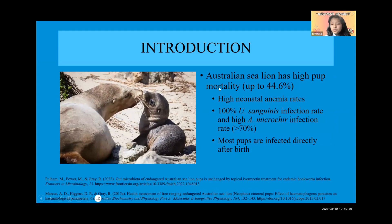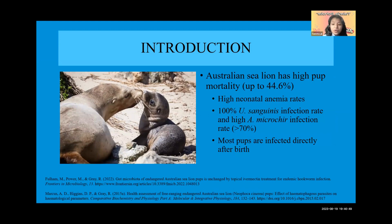One of the reasons why the Australian sea lion likely has such a low population is because the pups have a really high mortality — up to 44.6%. They also have a really high neonatal anemia rate.